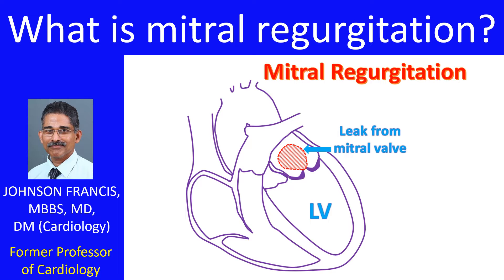In mitral regurgitation, as the valve is leaky, blood flows back into the left atrium, the upper chamber, when the left ventricle contracts. This leads to enlargement of the left atrium.